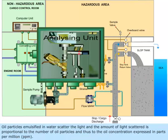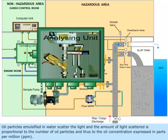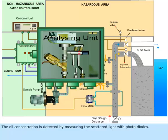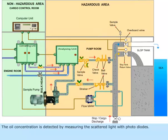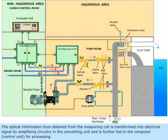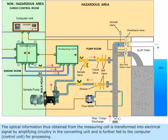Oil particles emulsified in water scatter the light, and the amount of light scattered is proportional to the number of oil particles and thus to the oil concentration expressed in parts per million (ppm). The oil concentration is detected by measuring the scattered light with photodiodes. The optical information obtained from the measuring cell is transformed into an electrical signal by amplifying circuitry in the converting unit and is further fed to the computer control unit for processing.